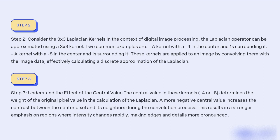A more negative central value increases the contrast between the center pixel and its neighbors during the convolution process. This results in a stronger emphasis on regions where intensity changes rapidly, making edges and details more pronounced.